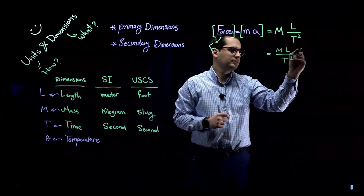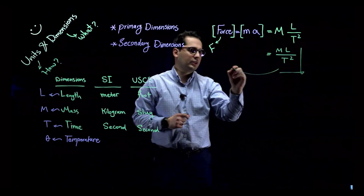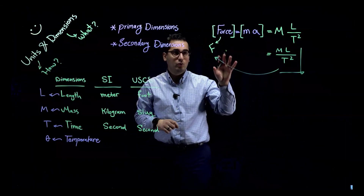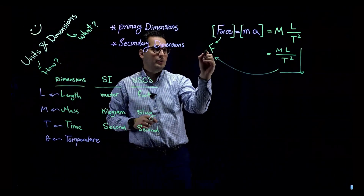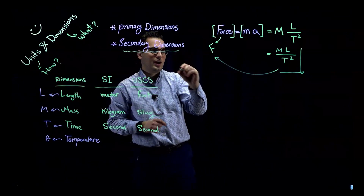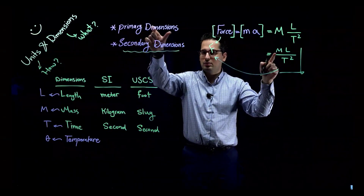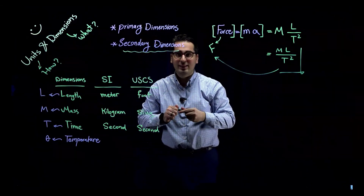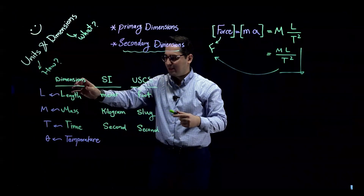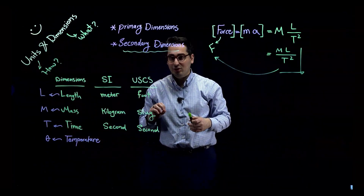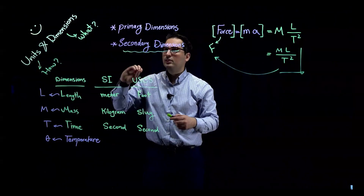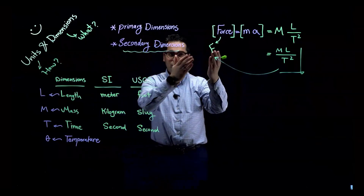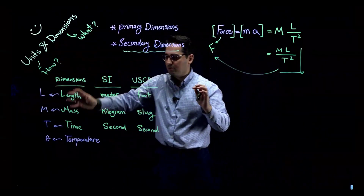So the dimension of force is M times L divided by T squared, written as ML/T². This means force is a secondary dimension — I have written force in terms of the primary dimensions: length, mass, time, temperature, electrical current, amount of light, and amount of matter. We can write every other dimension, such as force, in terms of these primary dimensions.